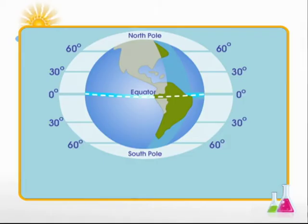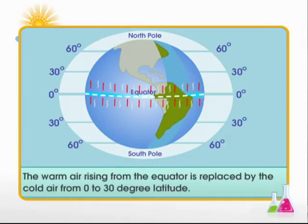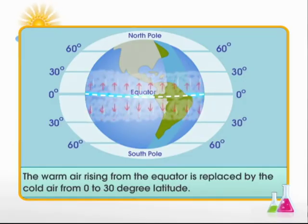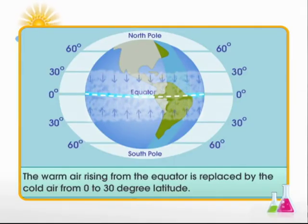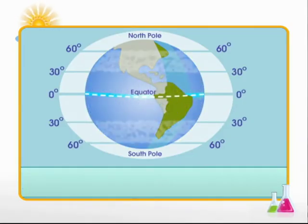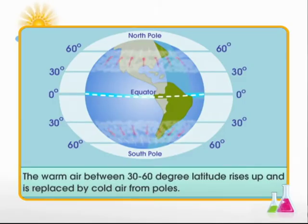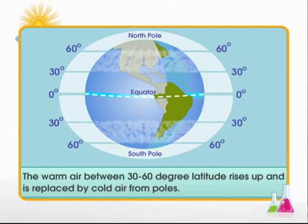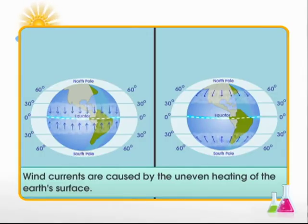Let's see how. The lighter warm air at the equator weighs less than cold air, so it rises. The cool air from regions in the 0 to 30 degree latitude from either side of the equator moves in and replaces the warm air at the equator. This generates the wind currents in this part of the earth. The warm air between 30 to 60 degree latitude rises up and the cold air from the poles replaces it. This generates the wind currents near polar regions. So, globally uneven heating of the earth's surface is one of the main reasons for wind formation.